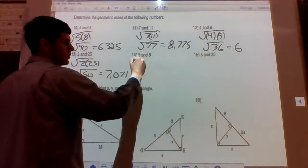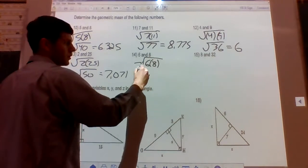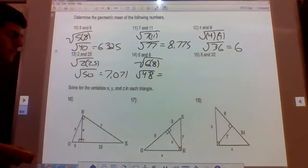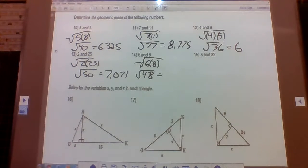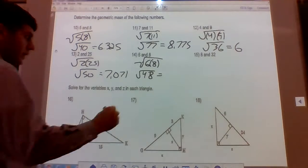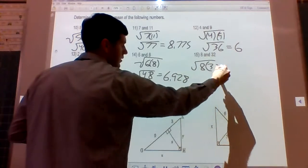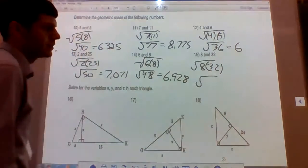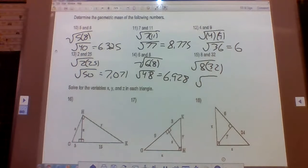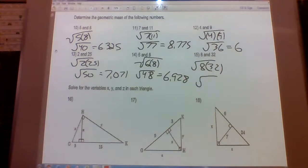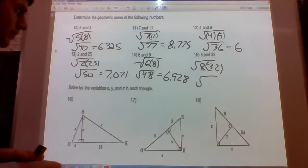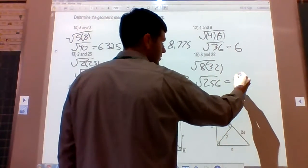The geometric mean of 6 and 8 is the square root of 48, which is 4 root 3, approximately 6.928. The geometric mean of 8 and 32 is the square root of 256 — since 8 times 32 equals 256 — which equals 16. These were your decimal answers; you could have left them as radicals, but those are the decimal answers.